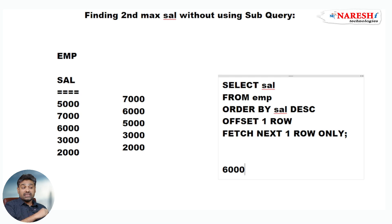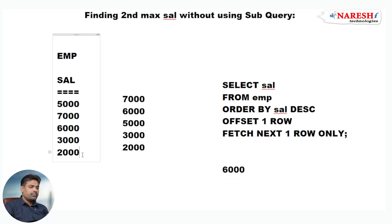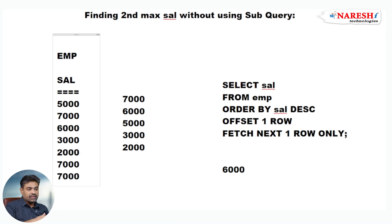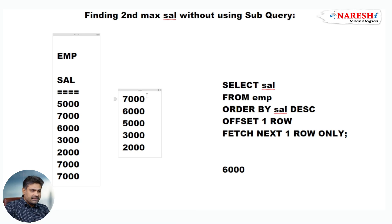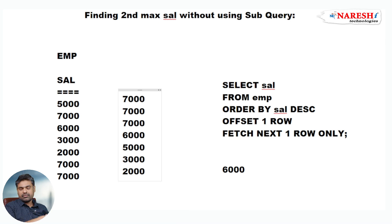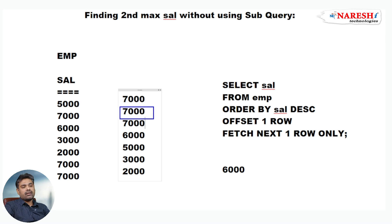But here one problem is there. What is the problem? For example, if 3 employees are getting the maximum salary 7000, and we arrange in descending order, now 3 values of 7000 are there. So if you fetch the second row, you get 7000 — you are getting wrong output now.